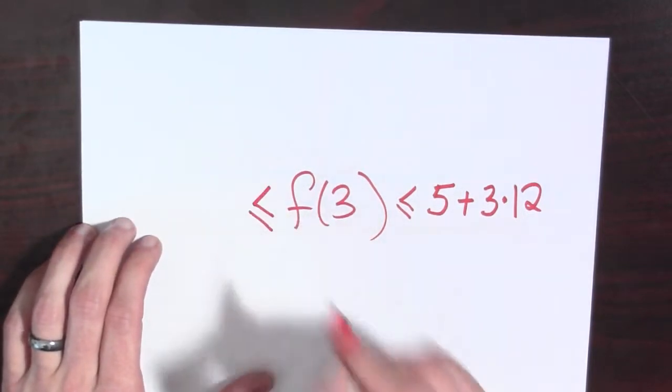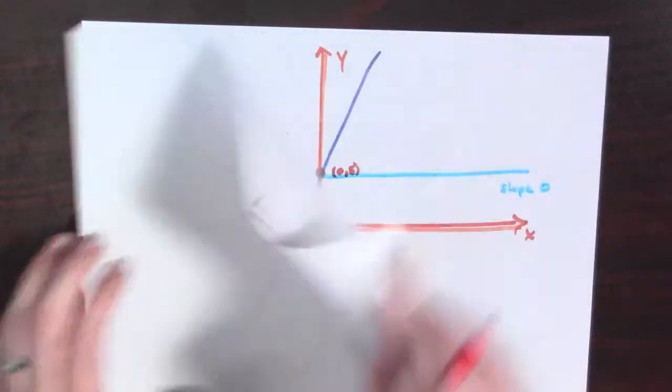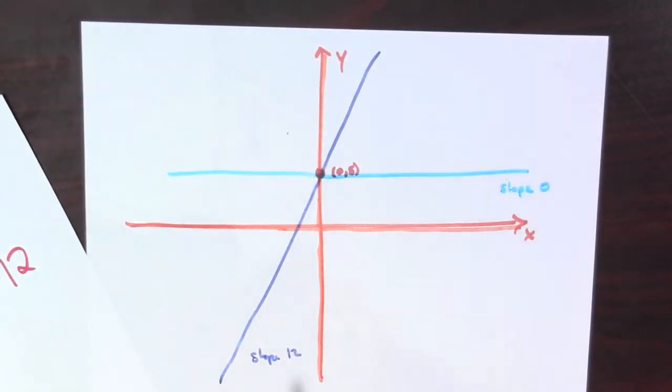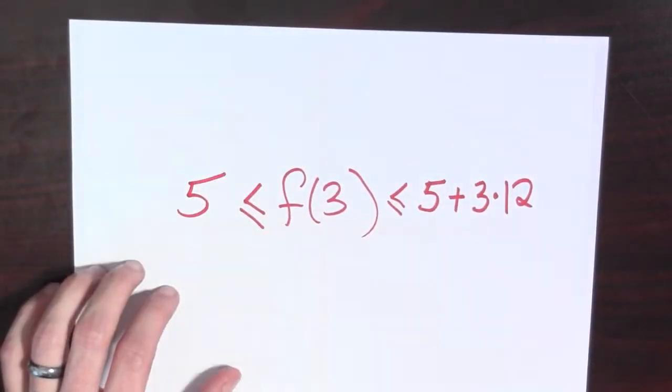On the other hand, it's got to be greater than or equal to - well, the function didn't grow at all. If we look here, it could have gone to 3 here, and it would have stayed at 5. So that's greater than or equal to 5.